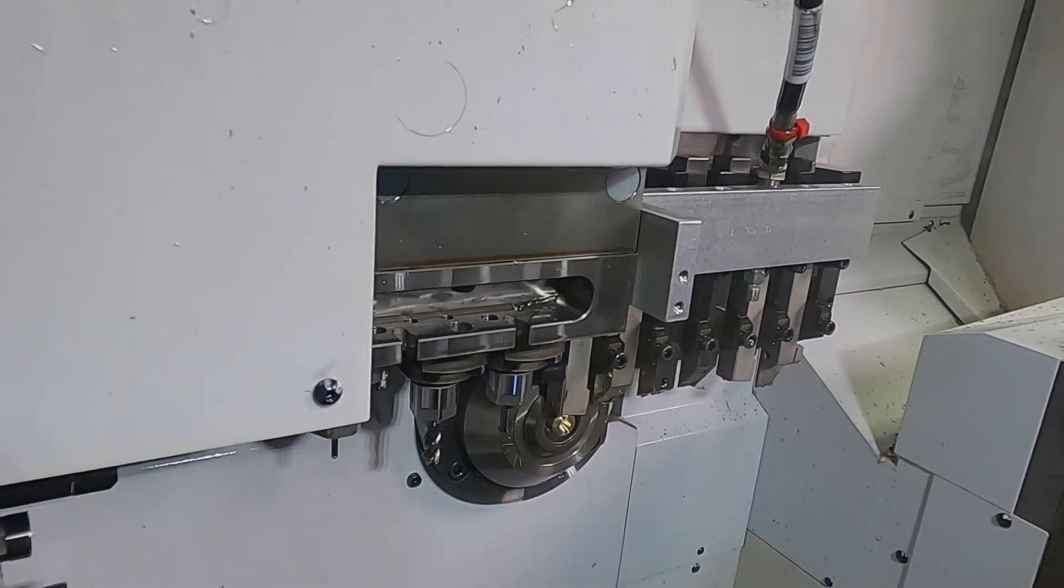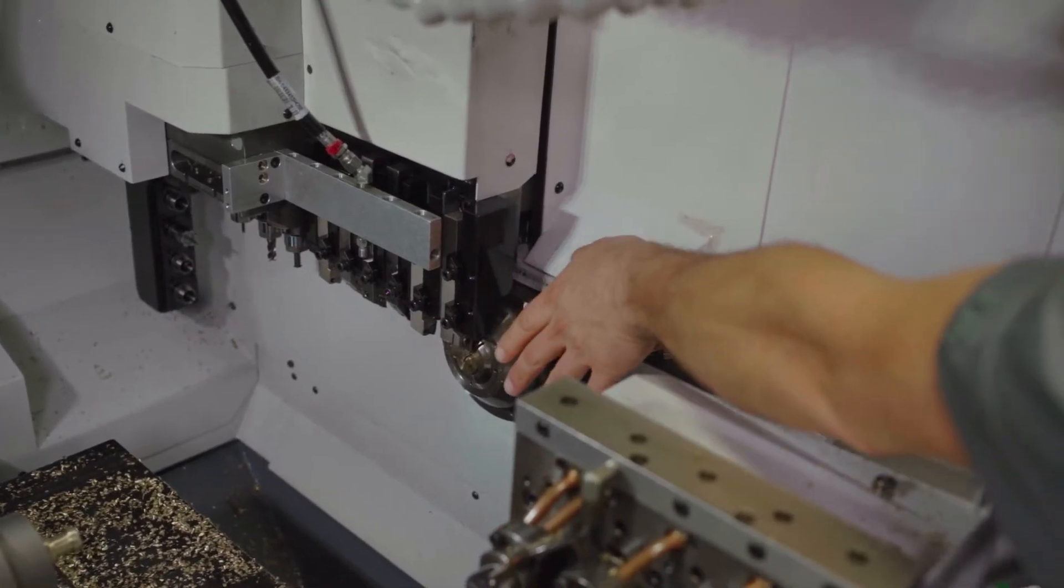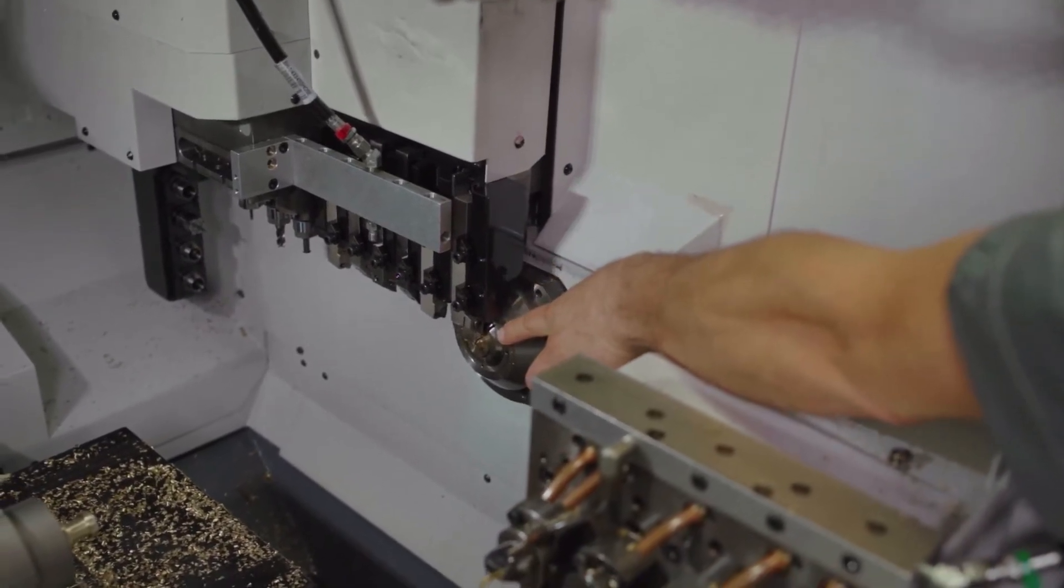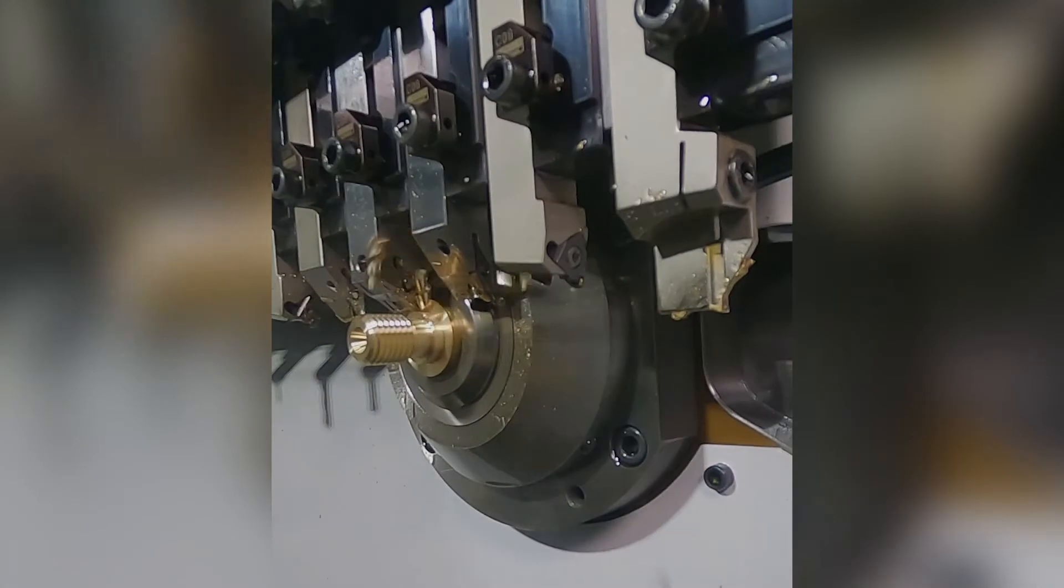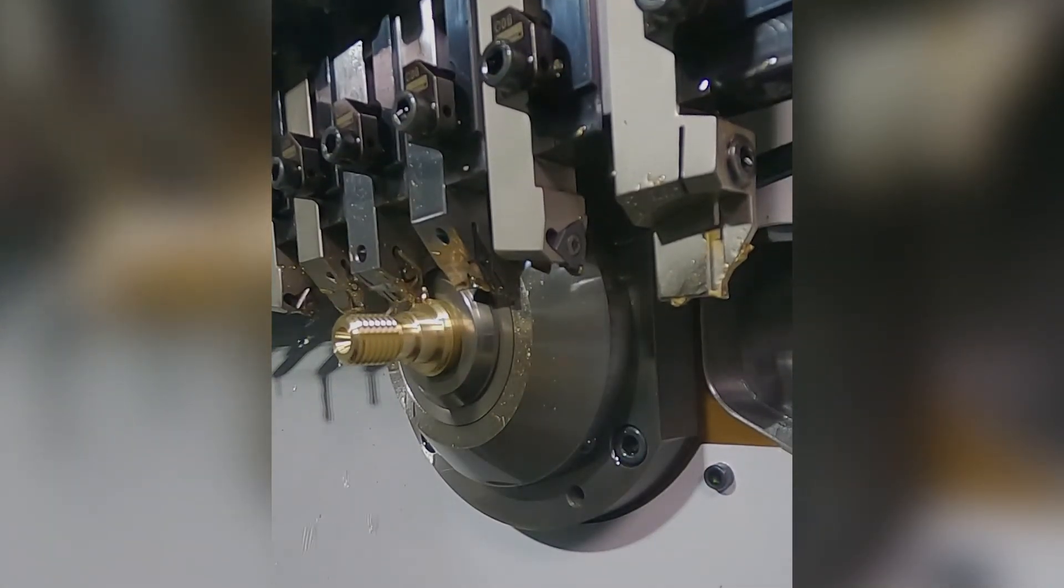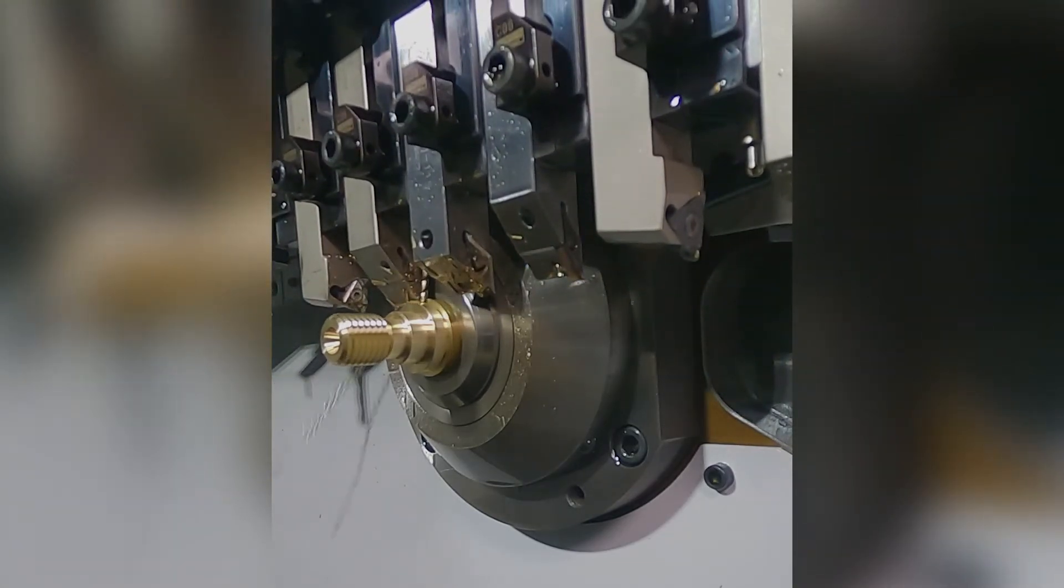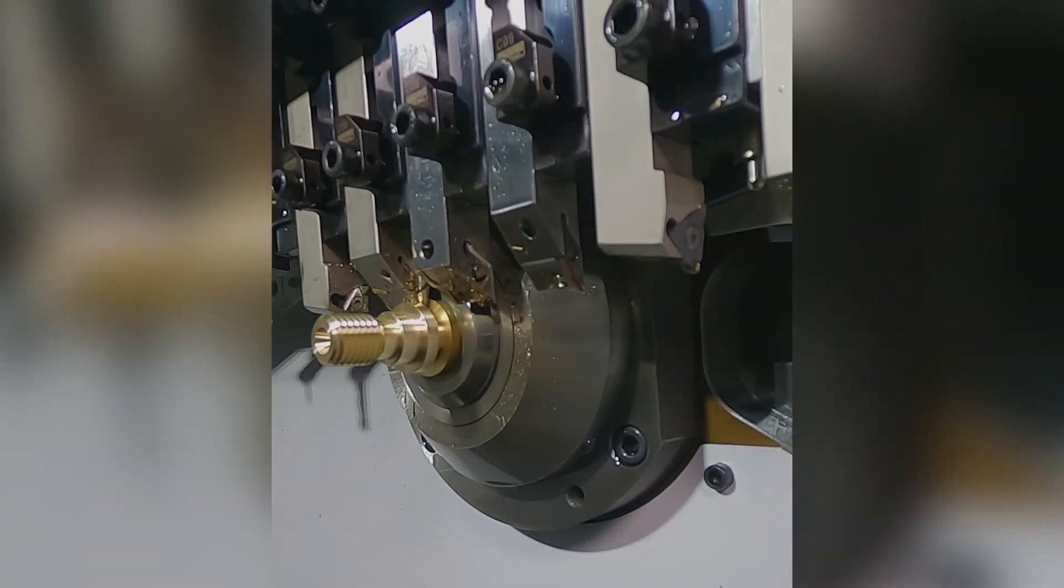On this gang arm we have our OD turn tools, our cutoff and threader, and our other static tools. This gang is always positioned right in front of the guide bushing. This allows rigid support, a close point of cut at the guide bushing, and allows us to turn long continuous runs without dealing with tool deflection and controlling tight tolerances.